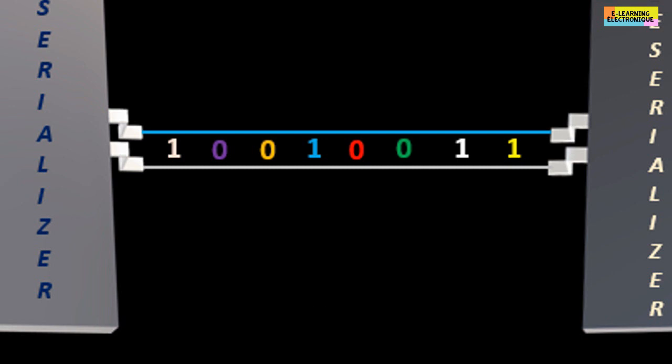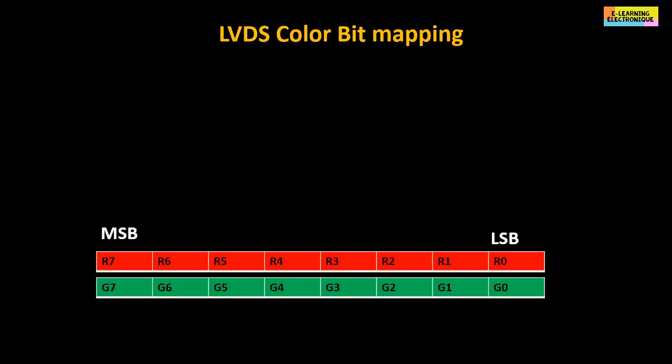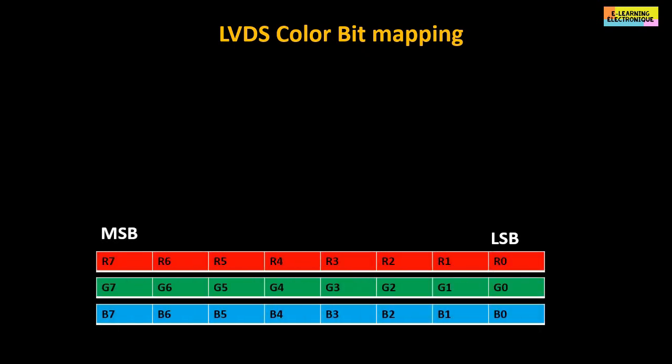The bit furthest to the right is the least significant bit or LSB, while the most significant bit is the one furthest to the left and is known by its abbreviation MSB, which stands for most significant bit. The concept of weight value of the bit that it is LSB or MSB is important for the organization of the order of the bits of the colors RGB in the circuit LVDS.